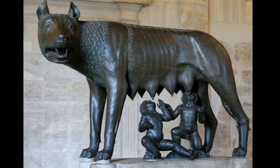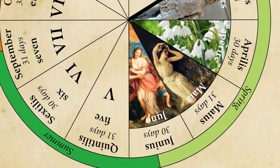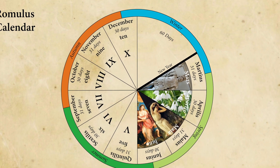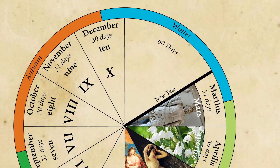At this point, Romulus must have gotten called to dinner by his wolf mother, because the 5th through 10th months of the year are named a bit lazily after the Roman numerals 5 through 10: Quintilis 5, Sextilis 6, September 7, October 8, November 9, and December 10. The remaining 60-odd days of winter were floating free at the end of the year and not assigned to a month.